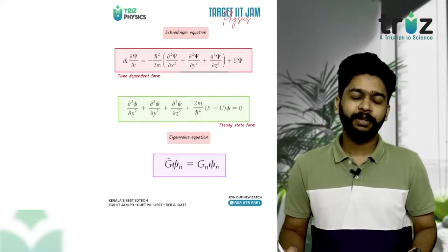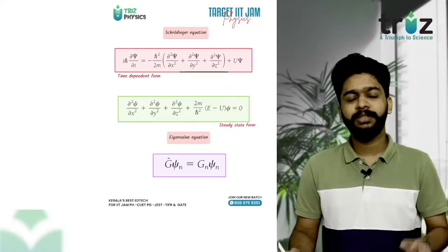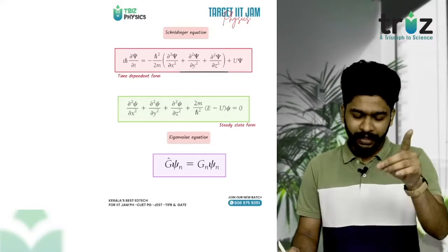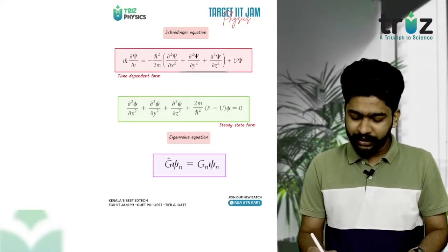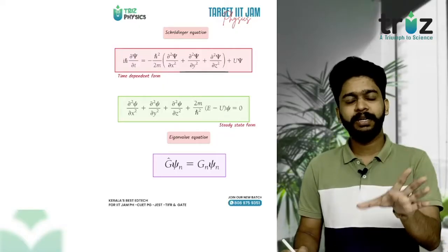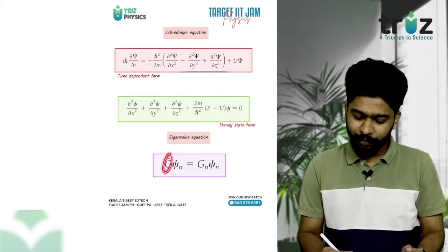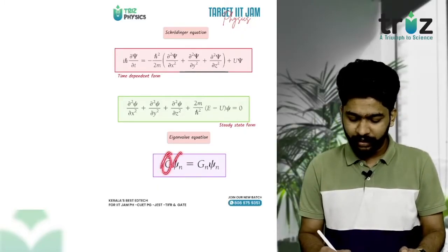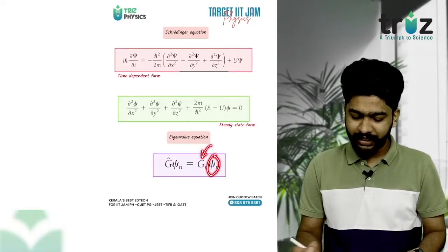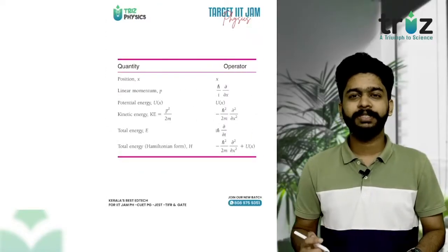The time-independent form is a steady-state form. If the value is substituted, this is the bound state problem. The solution will be equal to the eigenvalue.